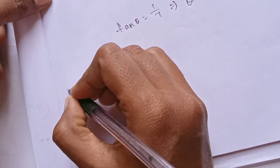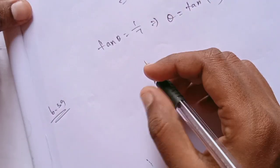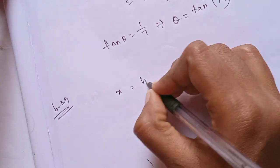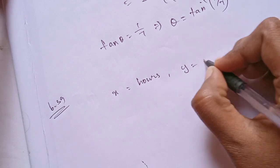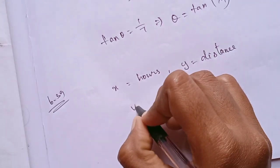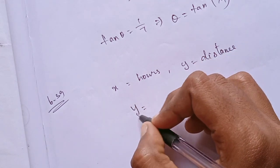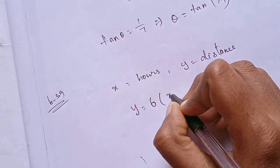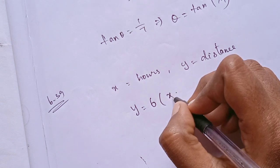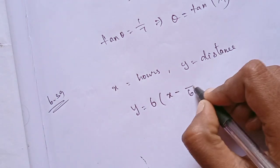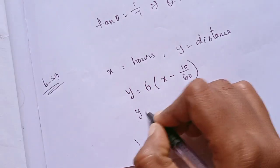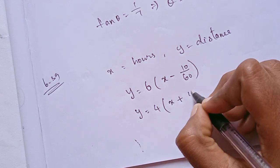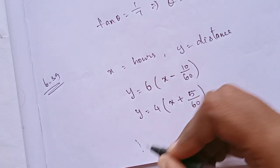First, we will see the equation form. Let x and y be our variables. Distance — we will find first. Let y be the school distance, so y equals 6 km, and x is the timing variable. School timing from house is 10 minutes, and 4 km per hour timing is 5 extra minutes.